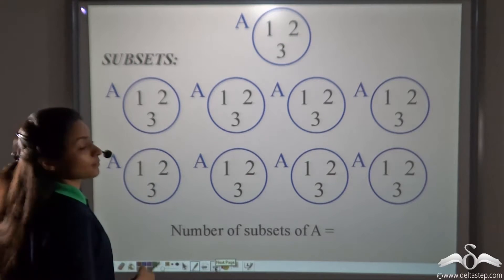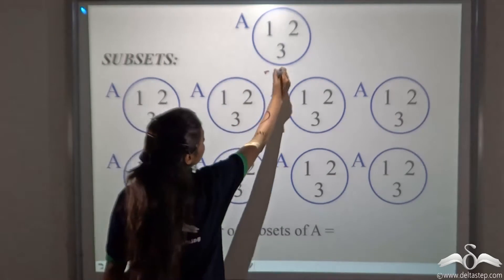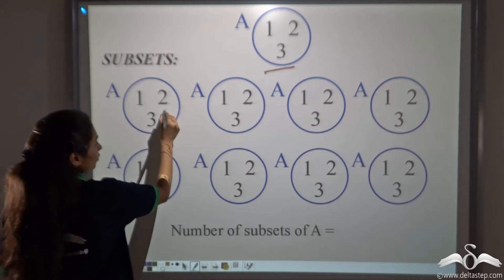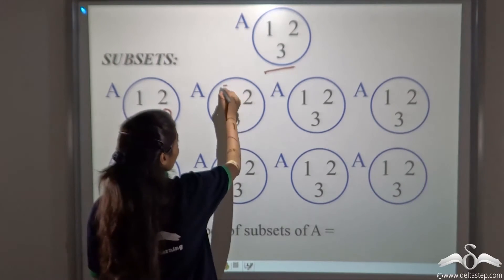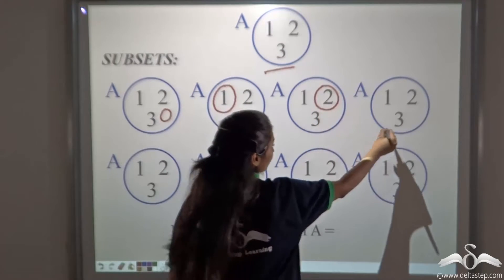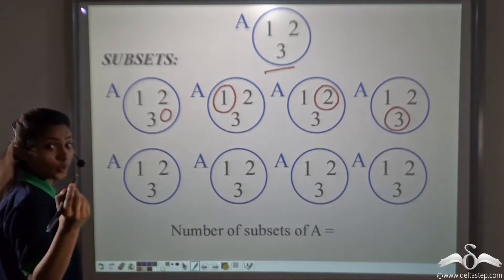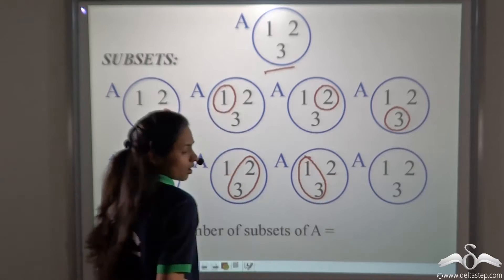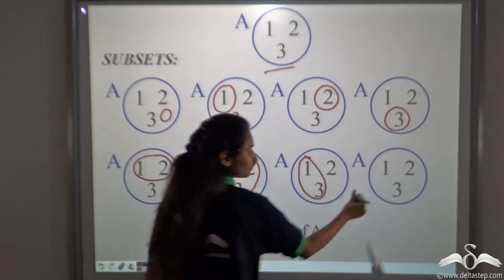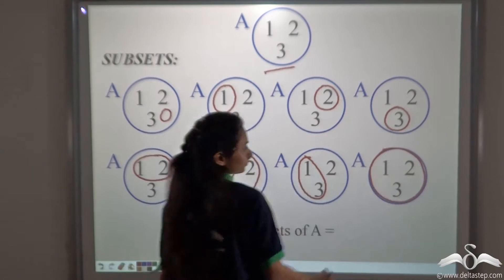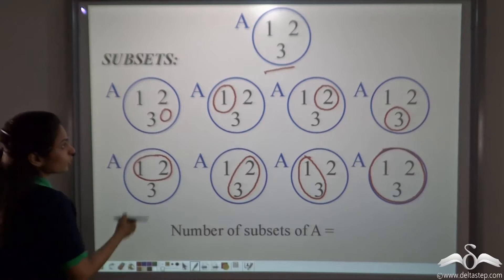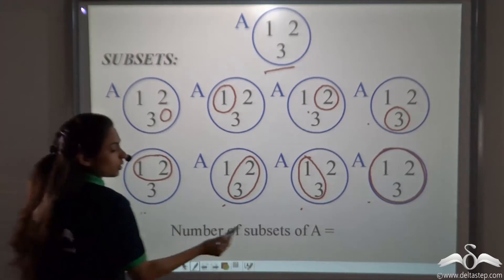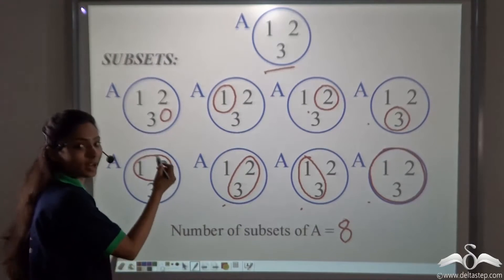Now let's represent the subsets on the Venn diagram. This is the set and we have to write the subsets inside it. The first subset is the empty set — you can draw it anywhere. Subsets with only one element: one, only two, and only three. Subsets with two elements: one and two, two and three, or one and three. One more subset — the set itself. So the number of subsets of A are eight, which is the same answer we got in the roster form.